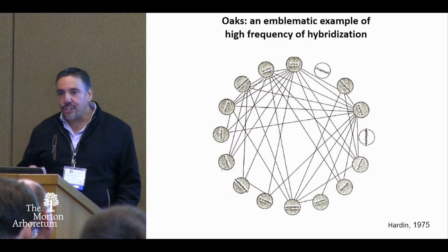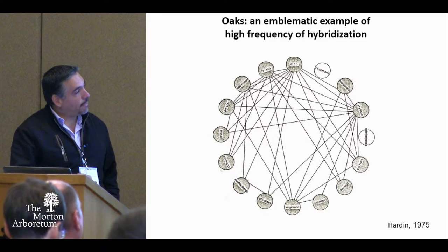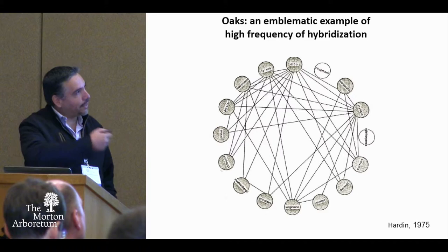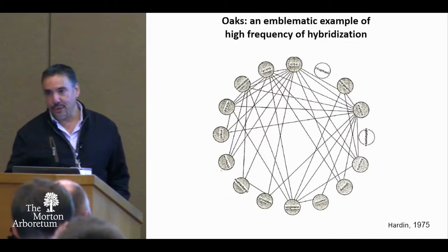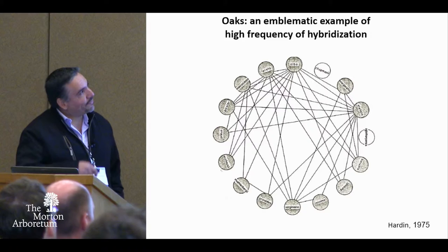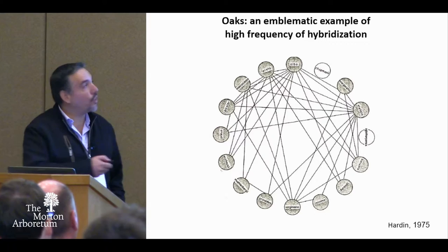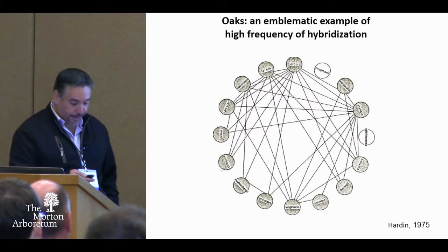We all know that oaks are an emblematic example of a group with a very high frequency of hybridization, as can be exemplified by this figure in a paper by Hardin in 1975, where he indicated all the hybridization interactions among 16 different white oaks in the eastern United States. At that time, he thought that two species were the only ones isolated from all the others. But Andrew Hipp recently, in the latest issue of the Journal of the International Oak Society, pointed out that these two species also hybridize, so none of the species are actually completely isolated.